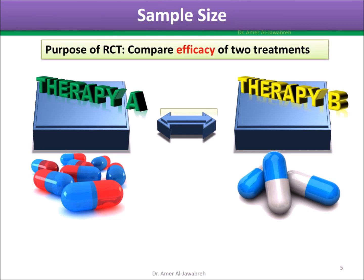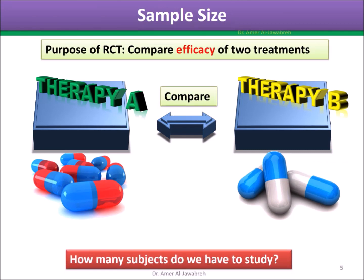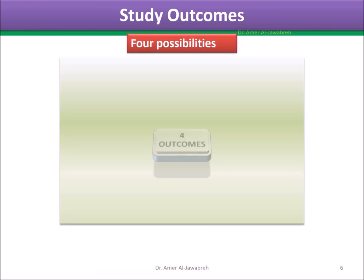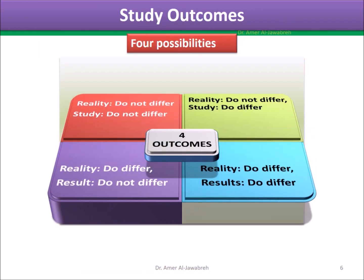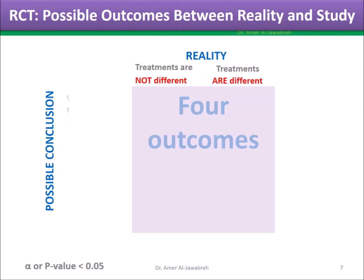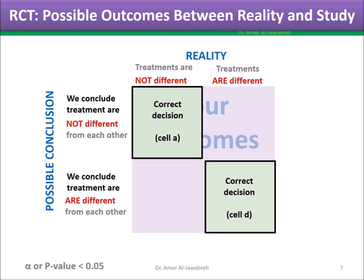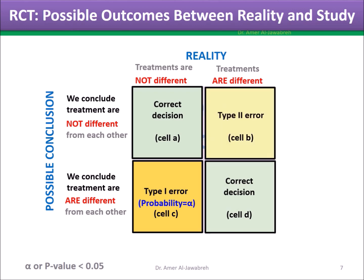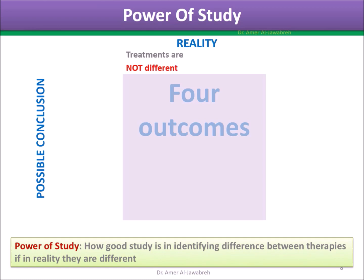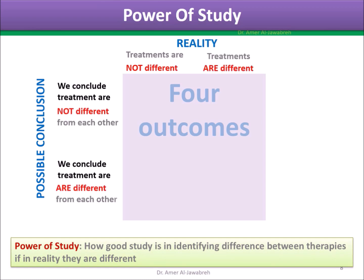Sample size: the purpose of an RCT is to compare the efficacy of two treatments. But how many subjects do we have to study? There are four possible study outcomes in terms of reality and study results, shown in a two-by-two table. This leads to Type 1 error and Type 2 error.